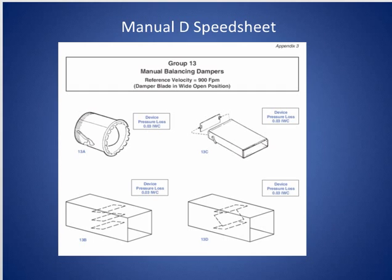On the speed sheet, when you click on it you get duct sizes, and something you're going to need to look at is what fittings are there. You need to learn what duct fittings are — like 90s, Ts, takeoffs, balancing dampers, and all other parts. You have to be able to identify all the parts. If you don't know how, look at Appendix 3 in Manual D, which covers all the different groups of components so you can study them, identify them quickly, and put them on the speed sheet.